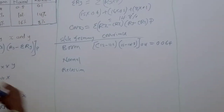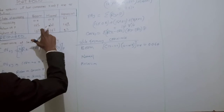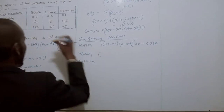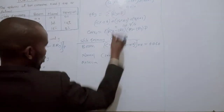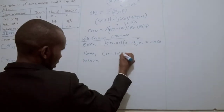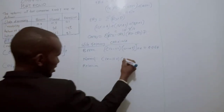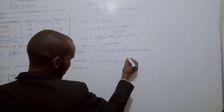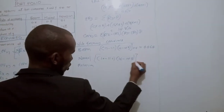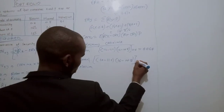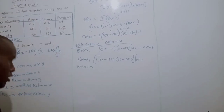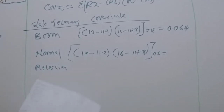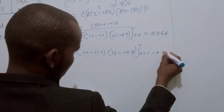When the economy is normal, the return of X is 10 and the return of Y is 16. We take 10 minus 11.2, multiplied by 16 minus 14.8, then multiplied by the normal probability of 0.5. So: (10 − 11.2) × (16 − 14.8) × 0.5 = −0.72.